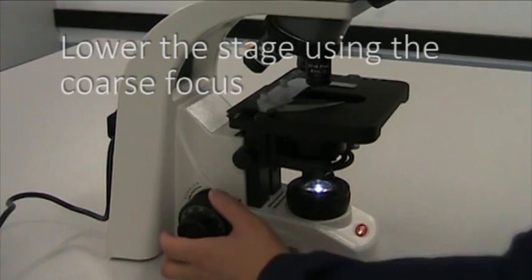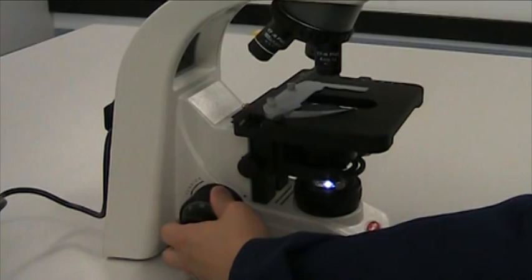By rotating the coarse focus knob, lower the stage to its lowest position. The coarse and fine focus knobs adjust the height of the stage.